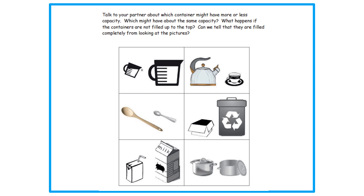Talk to your partner about which container might have more or less capacity. Take a look at these pictures. Which might have about the same capacity? What happens if the containers are not filled up to the top? Can we tell that they're filled completely from looking at pictures? If we are looking at these two cups right here, can we tell if they're both filled to the top? Can you tell me which one has more capacity? I wonder how you might think or know if one has more capacity than the other. Use your thinking brain and tell me in a complete sentence which one you think has more capacity than the other.